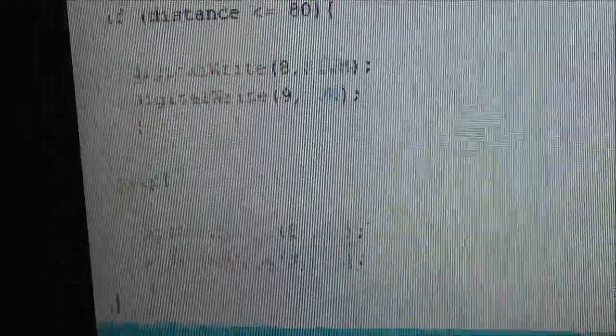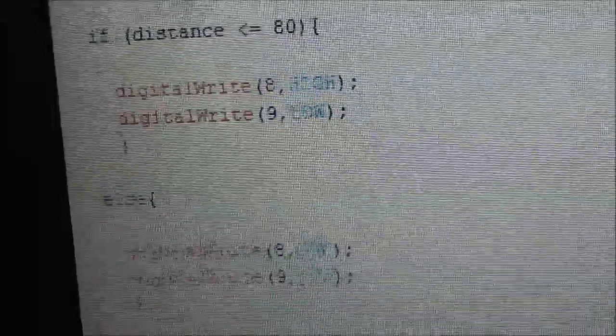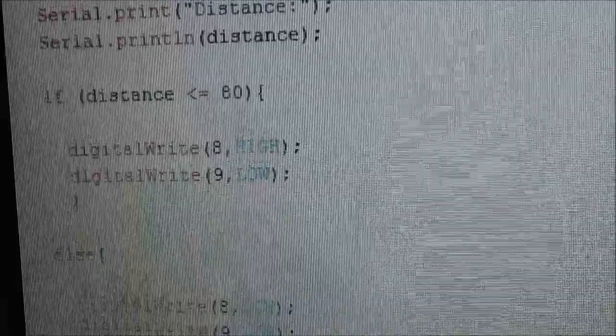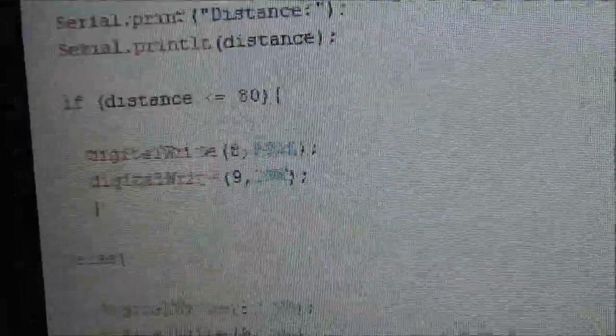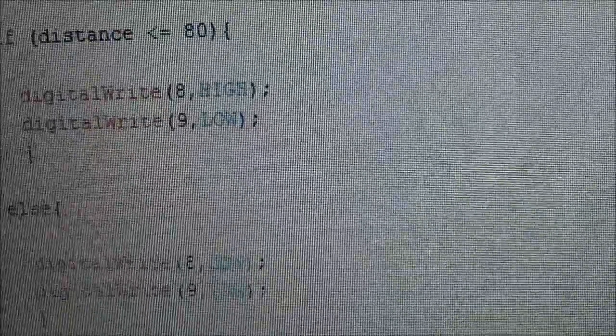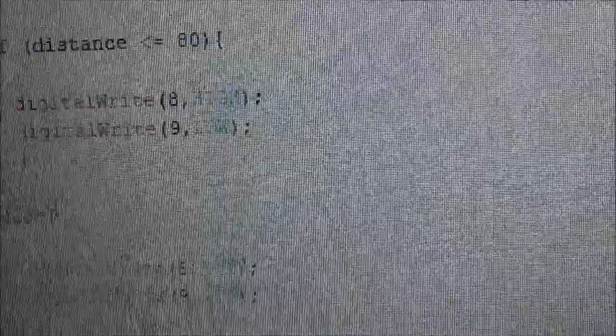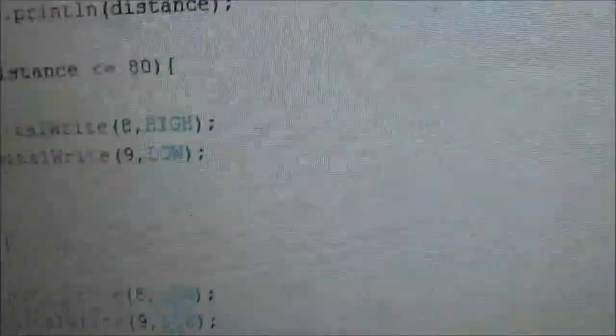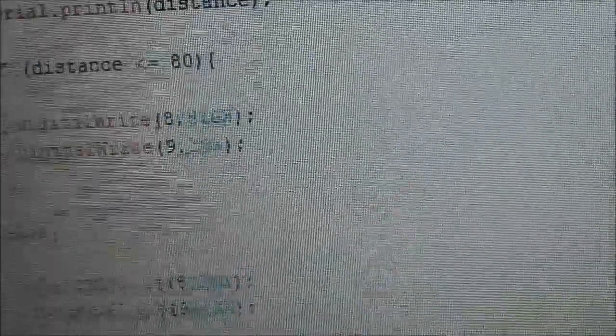And the last part and also the most crucial part is a set of if and else statements. So the condition of the if statement is that if the distance is less than or equal to 80 centimeters, then we'll give pin 8 a high voltage and pin number 9 a low voltage. And this will cause the toy cart and this part, the orange part, to start.